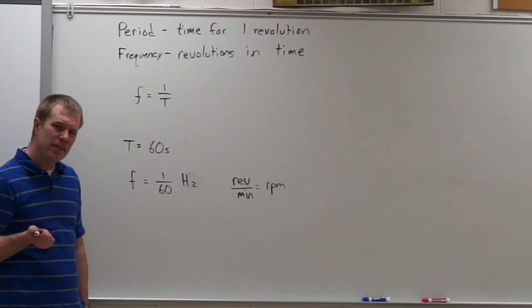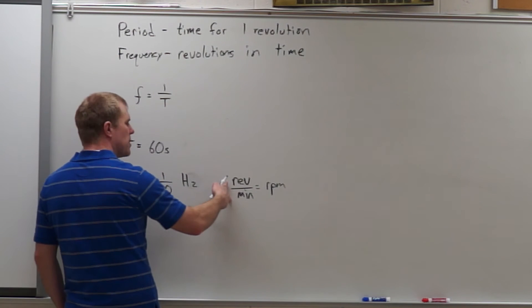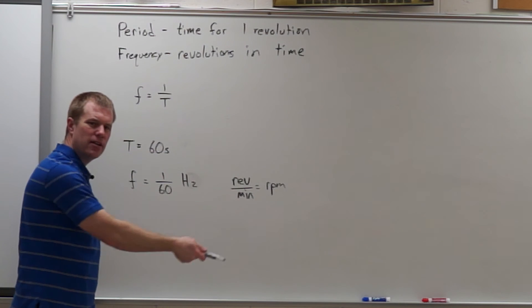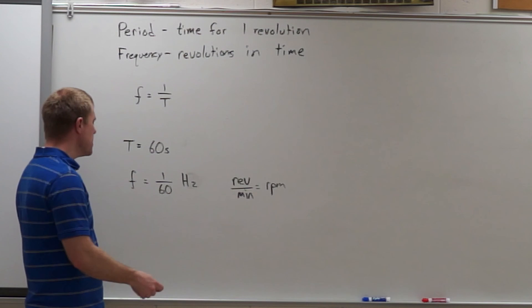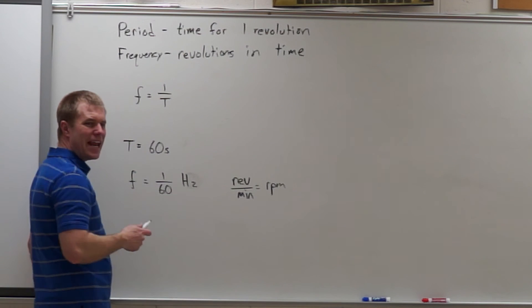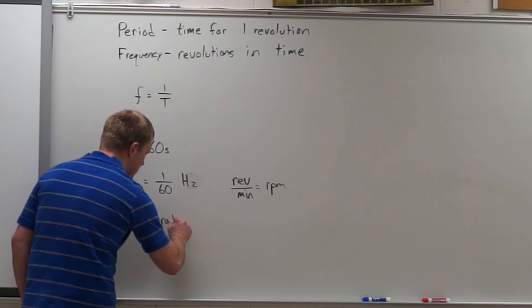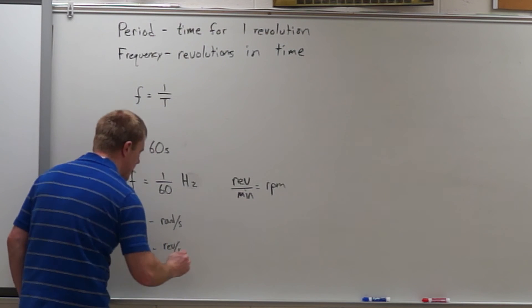Now the other one that's kind of interesting is because frequency is measured in revolutions per minute, that also tells us about how fast something's rotating. How fast something's rotating, that's talking about the angular speed. So if I want to get between angular speed, omega, which is in radians per second, and frequency, which is in revolutions per second.